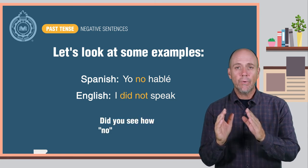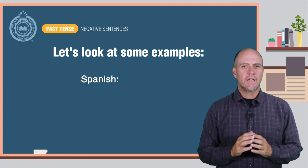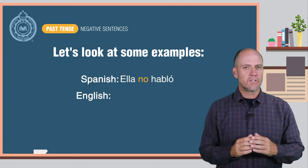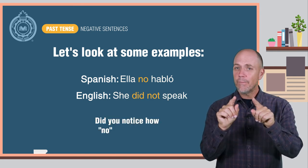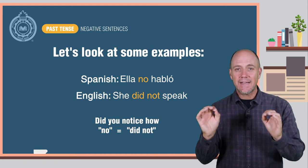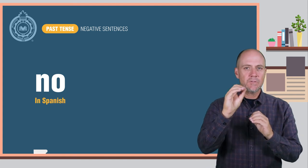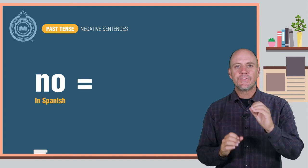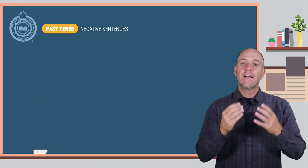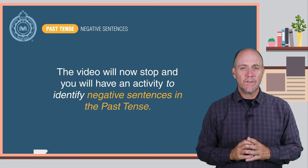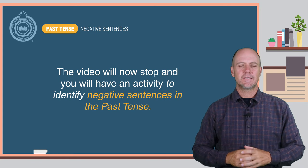Did you see how 'no' equals 'did not'? Spanish: ella no habló. English: she did not speak. Did you notice how 'no' equals 'did not'? Let me repeat the rule: 'no' in Spanish equals 'did not' in the past tense in English. The video will now stop and you will have an activity to identify verbs in the past tense in negative sentences.